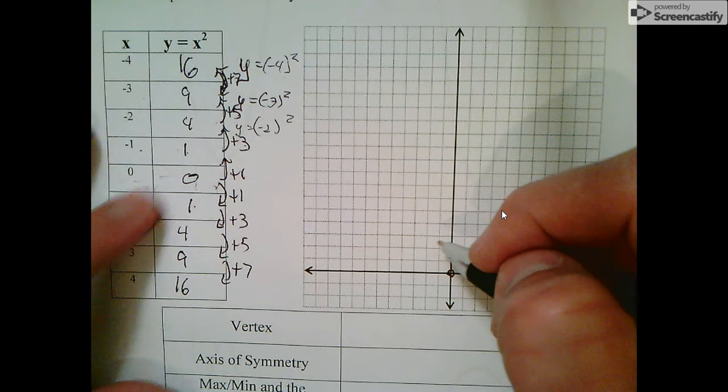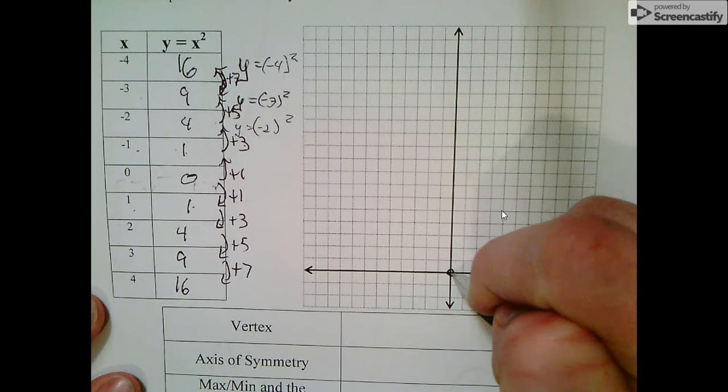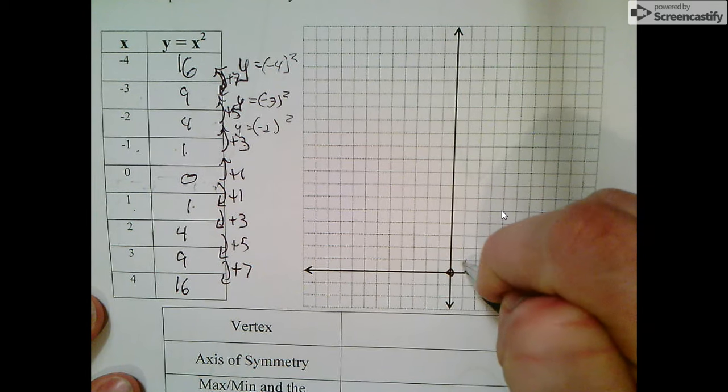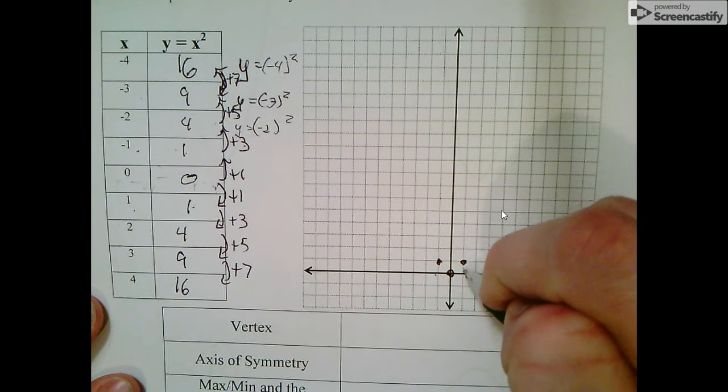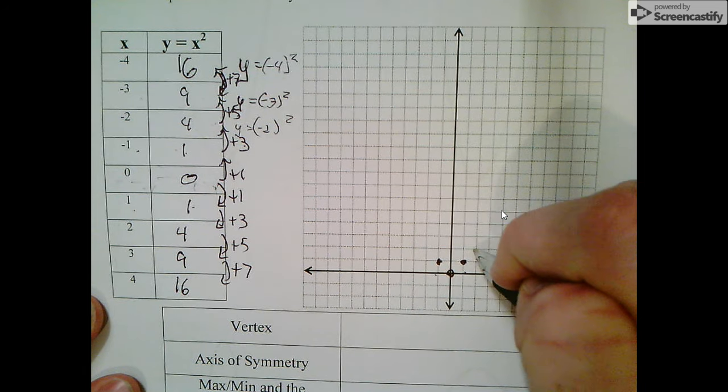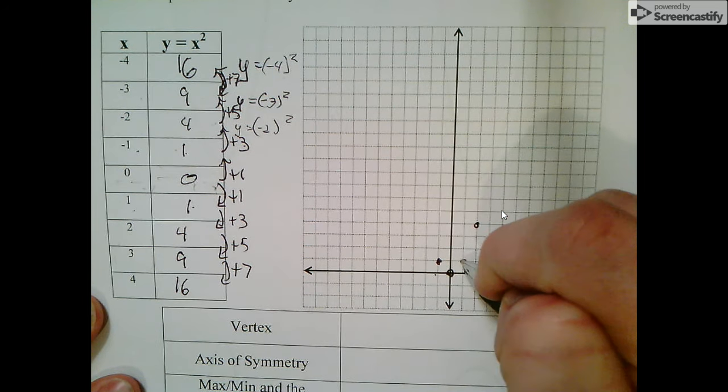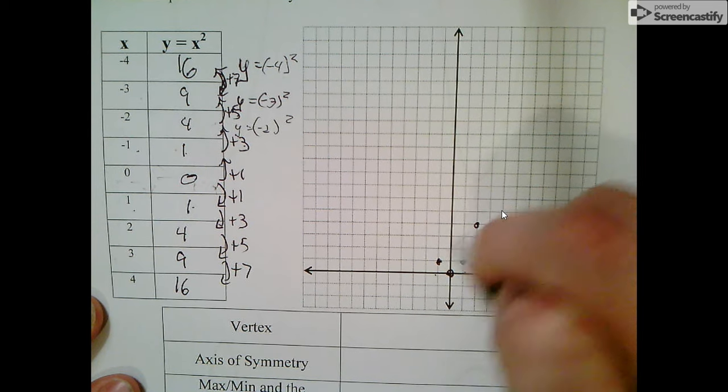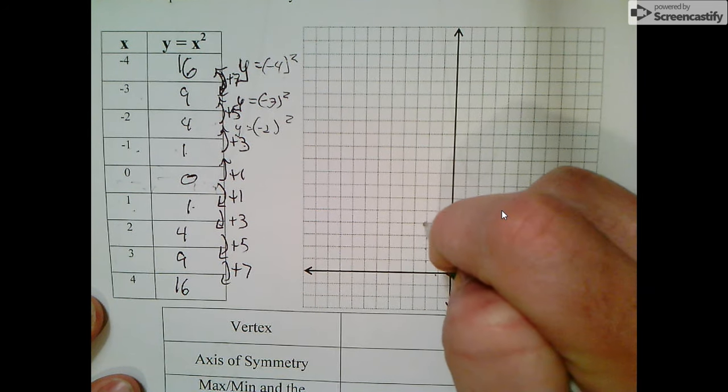We can graph each point individually or use the step pattern. Here's the vertex: go out 1, up 1; out 1, up 1. We're graphing (1,1) and (-1,1). We can graph (2,4), or go out by 1, up by 1, 2, 3.